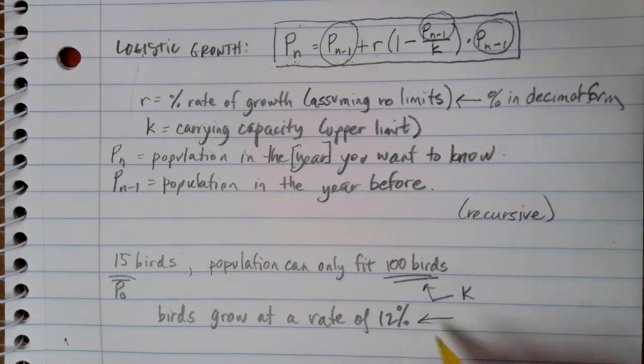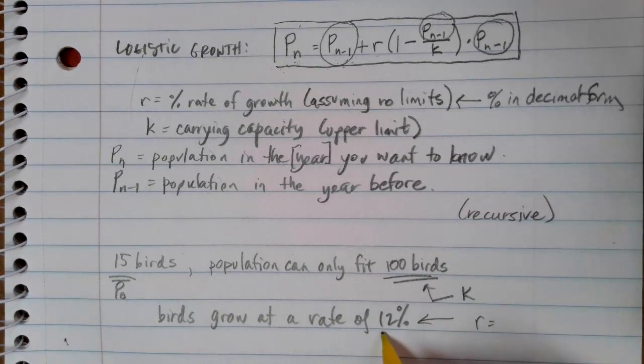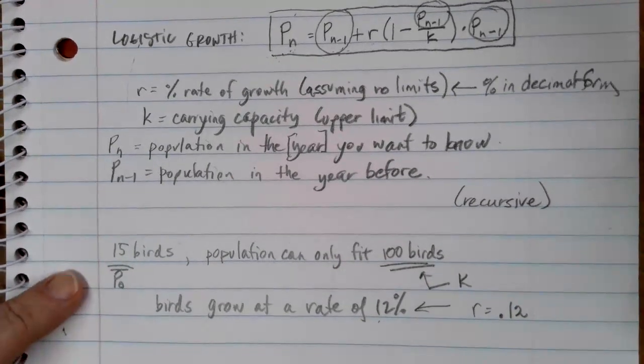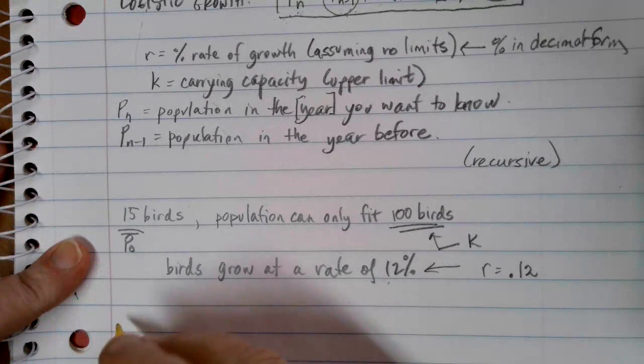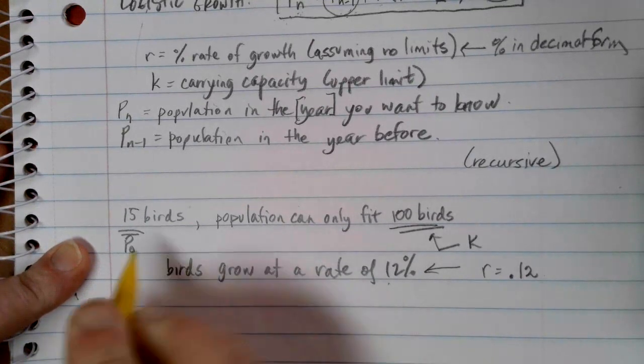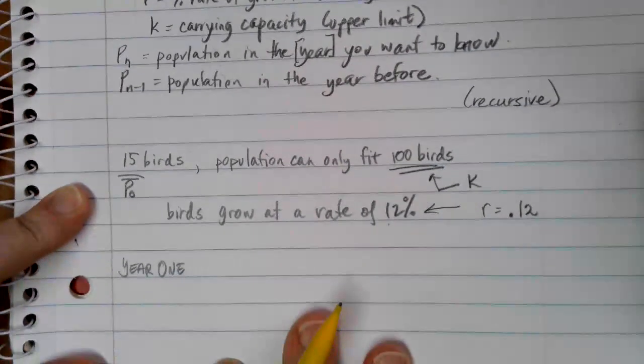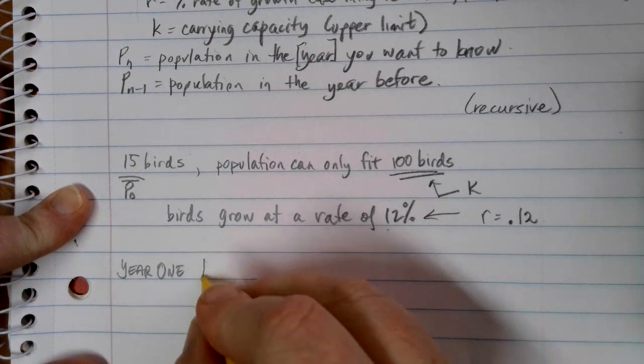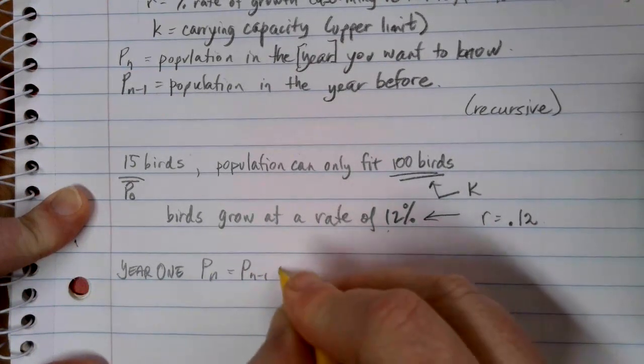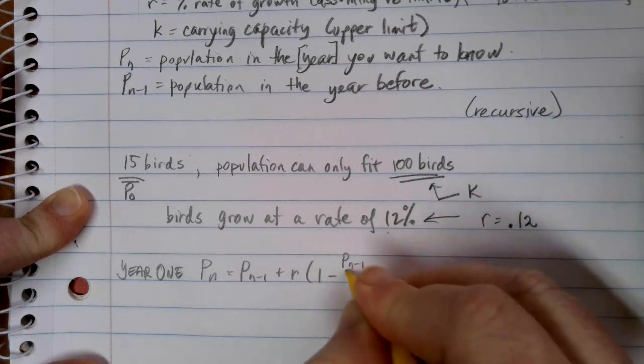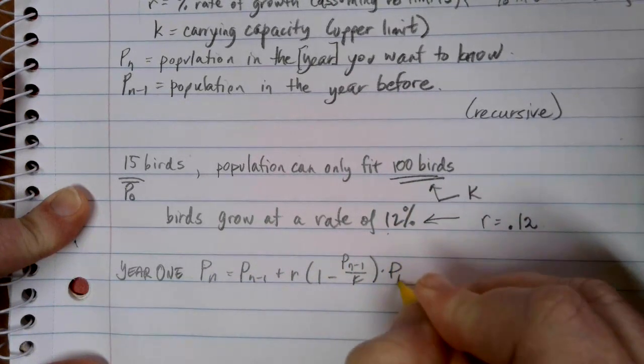Okay, so my rate is R. And then don't forget, you have to always change your percentages into decimal forms. So that's going to be our R is equal to 0.12. So if I want to know what's going on in year one, I need to use my information from year zero. So let's go through how our formula is going to work. Our general formula is P_N equals P_(N minus 1) plus R times 1 minus P_(N minus 1) over K times P_(N minus 1).